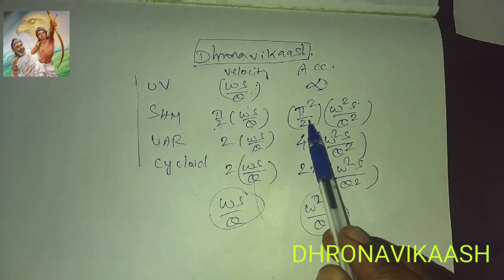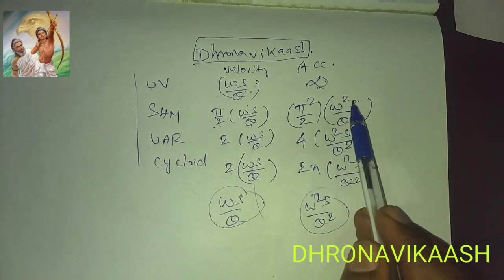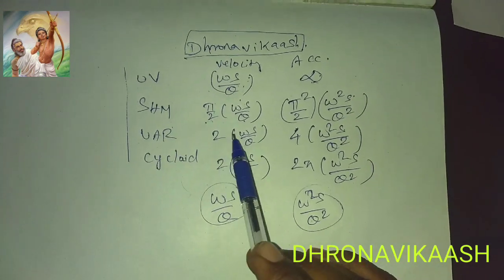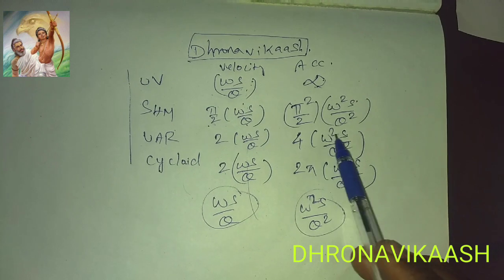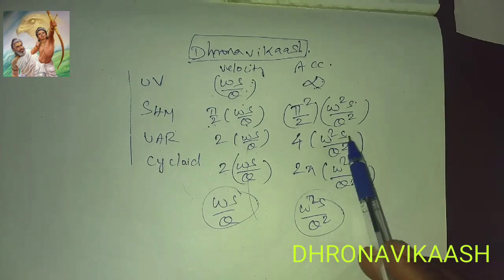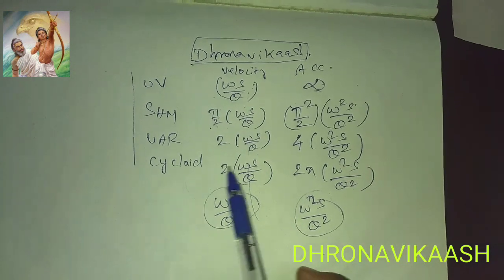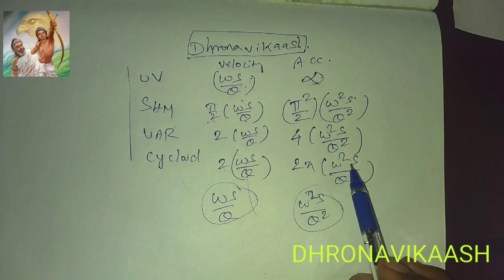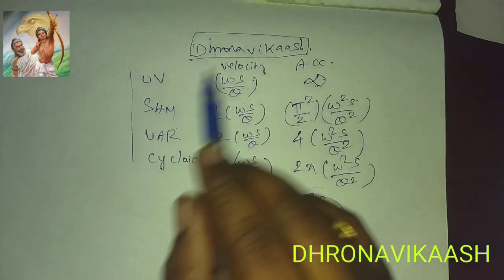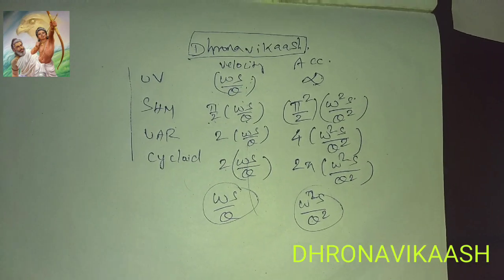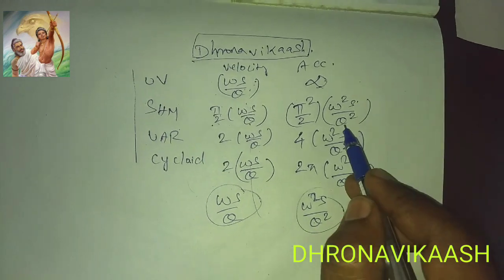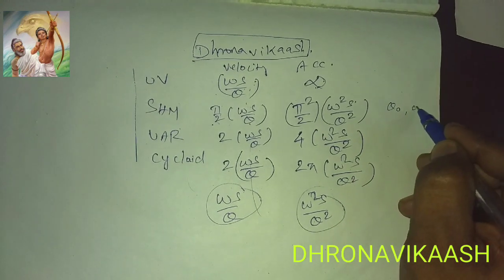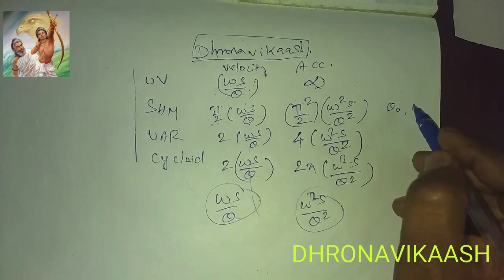Acceleration infinite. Simple Harmonic Motion: 5 by 2 ω sin θ, Acceleration 1, 5 square by 2 ω sin θ square. Uniform Acceleration: 2 into ω sin θ, 4 into ω sin θ square. Cyclic Arting Motion: 2 into ω sin θ, Acceleration 2 by ω sin θ square. So if you are interested in KYM,